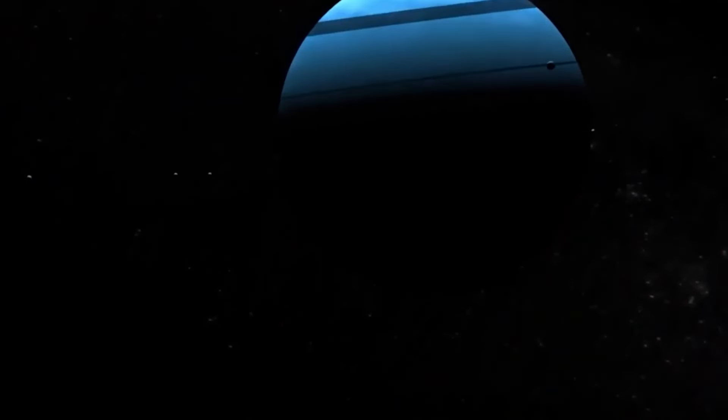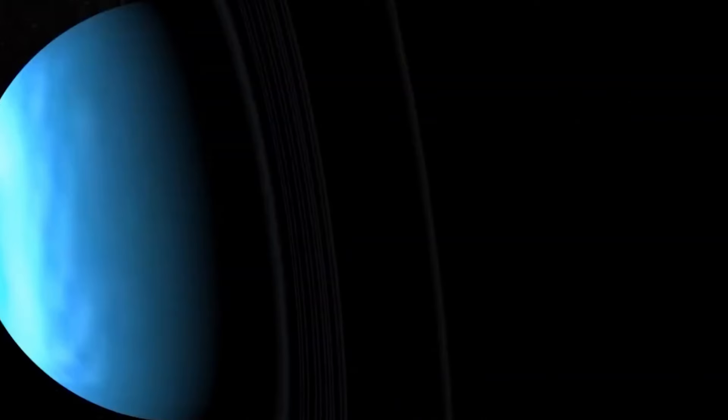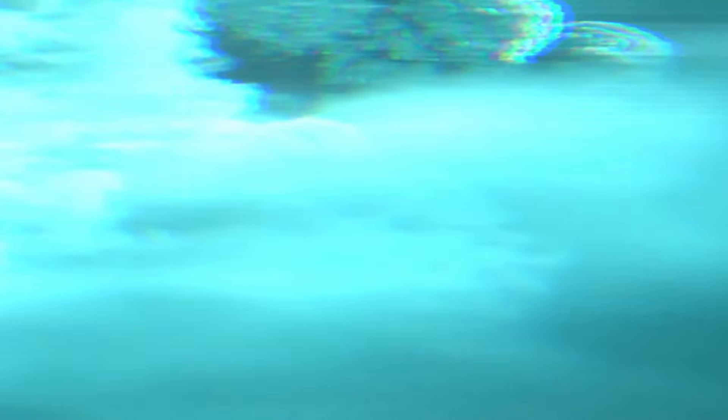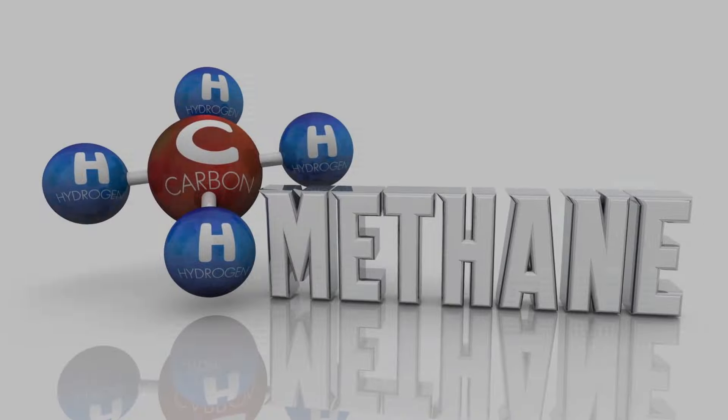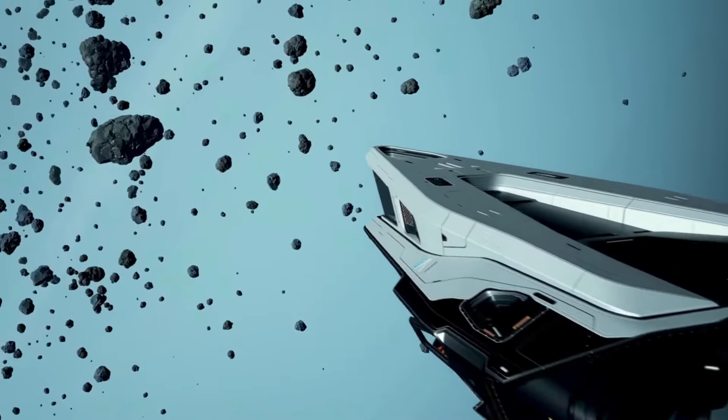Going further down toward the planet's surface, you'd start to notice there isn't one. Uranus is smaller and compositionally different than the gas giants Jupiter and Saturn. It consists of slushy water, methane, and ammonia fluids above a small rocky center.